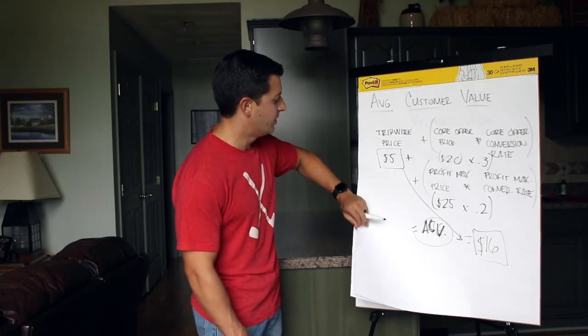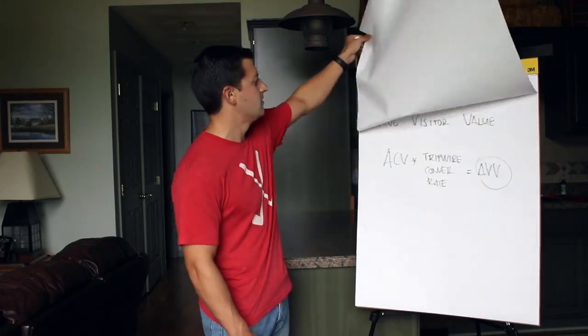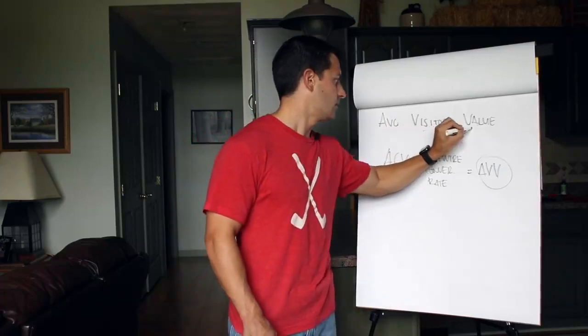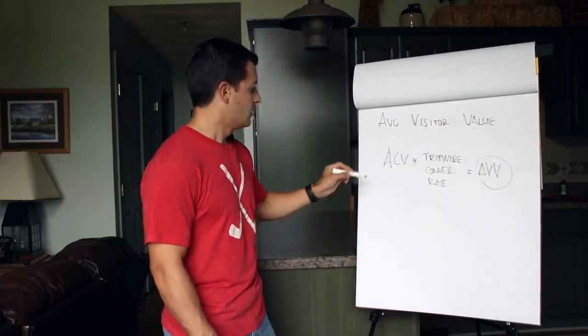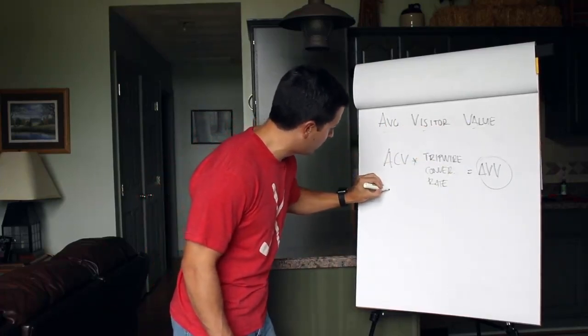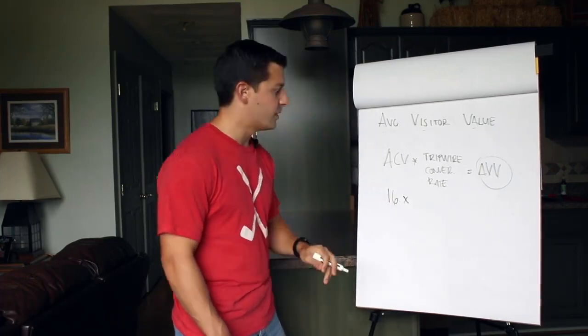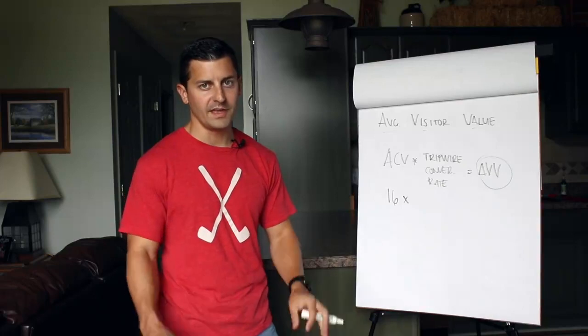So then take that average customer value to find the average visitor value. Average customer value was sixteen dollars times the tripwire conversion rate. Out of all the people that that ad reached, how many of them did we get to convert?